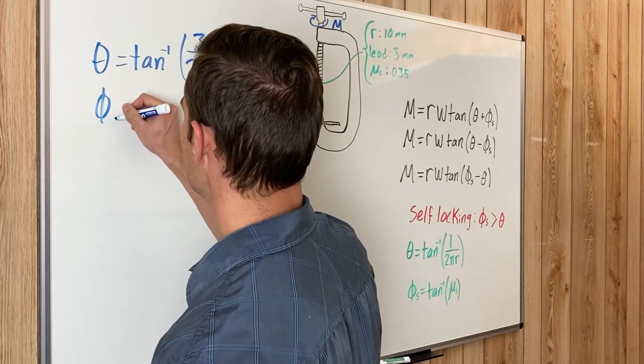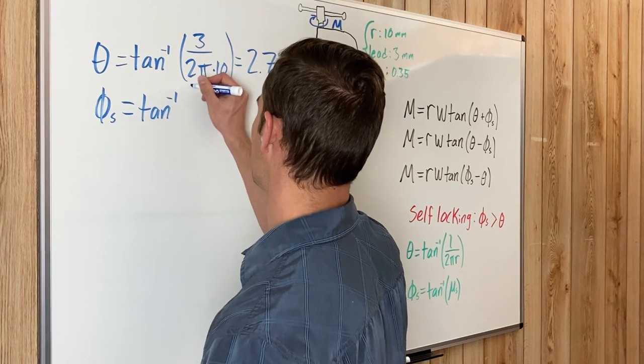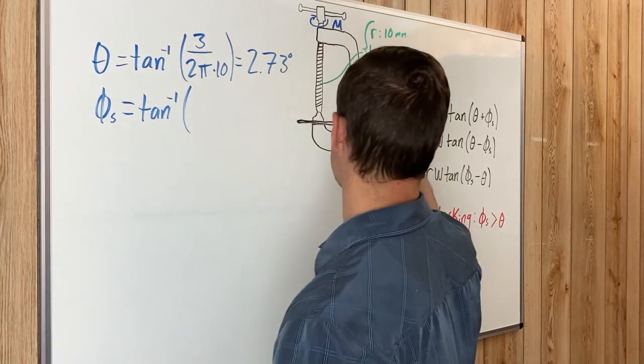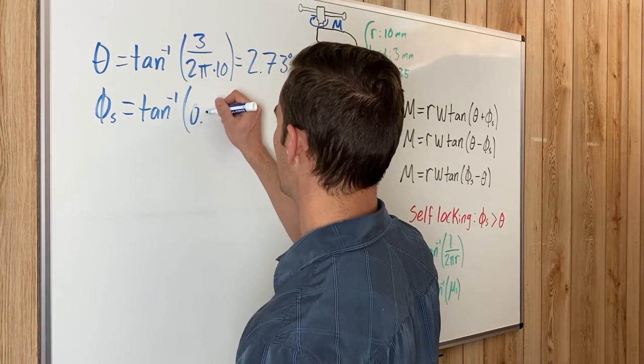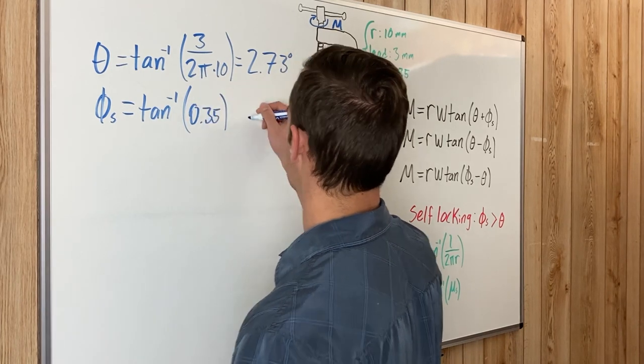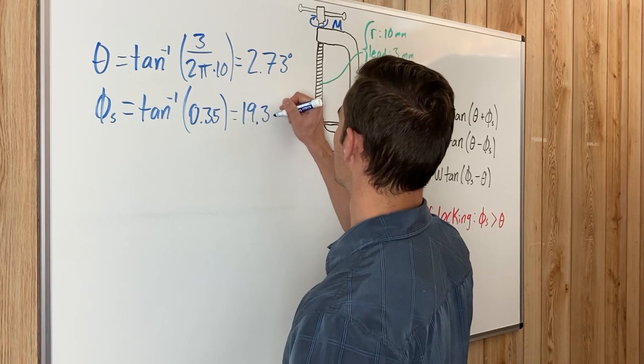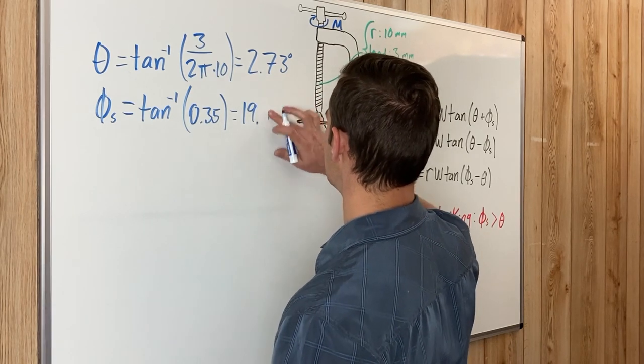Phi is the arc tangent of the coefficient of static friction, which is 0.35. Calculating that, you end up getting 19.29 degrees.